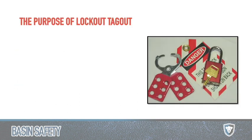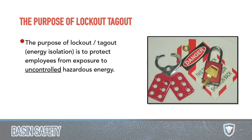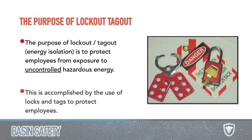So why do we care about lockout tagout? In our industry there's a lot of hazardous energy that can be uncontrolled, so the goal of lockout tagout — or energy isolation — is to isolate that energy and control it so people aren't exposed to it. We do that by using locks and tags, but that's just one element of a lockout tagout program. We'll cover the seven steps in a little bit.